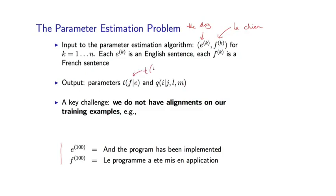For example, we might have an estimate of T of 'le' given 'there', or we might have an estimate of Q of 1 given 1, 6, 7. This, remember, is a distortion or alignment parameter.